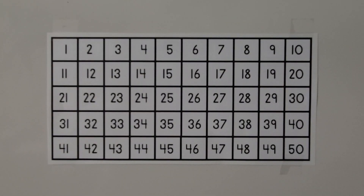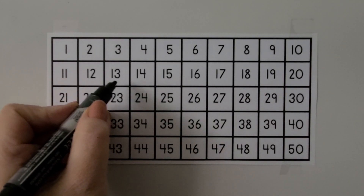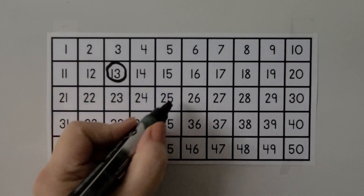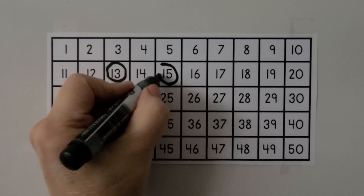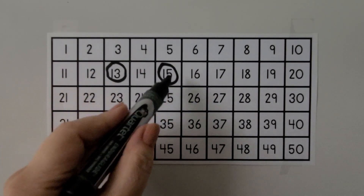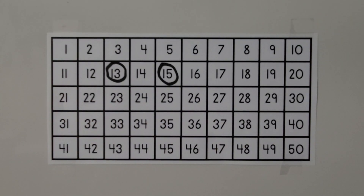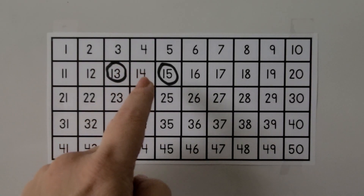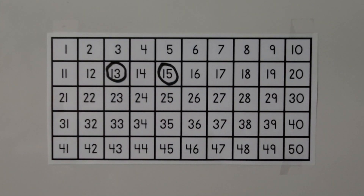We're going to use this 50 chart to help us solve some riddles. Here's the first one: What number is greater than 13 and less than 15? We can find 13 on our 50 chart — it's right here. We know it's greater than 13 and less than 15. Here's 15. If you said 14, you're right. 14 is greater than 13 and 14 is less than 15. We need to color the number square green, so we're going to color the 14 green.